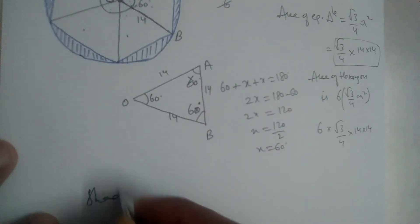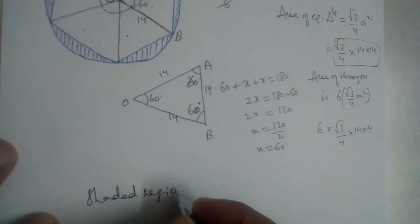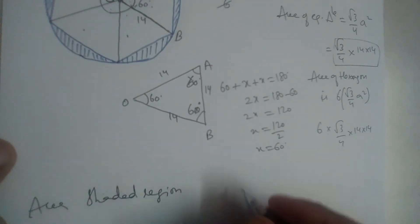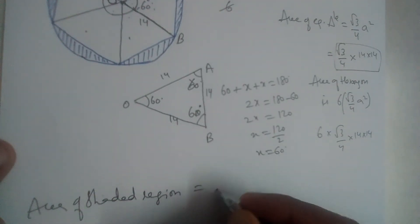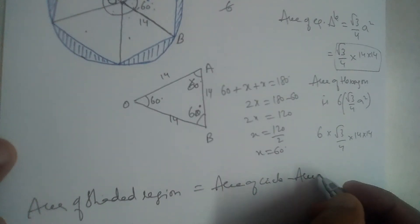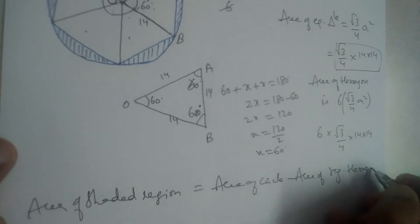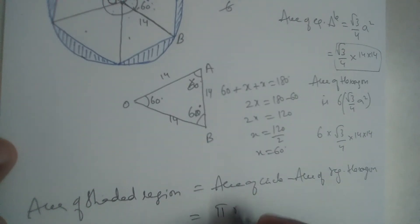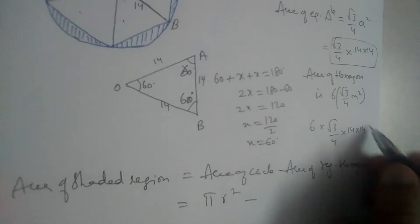So if you want to find shaded region, what we should do? Area of circle minus area of regular hexagon. So area of circle is pi r square minus area of hexagon.